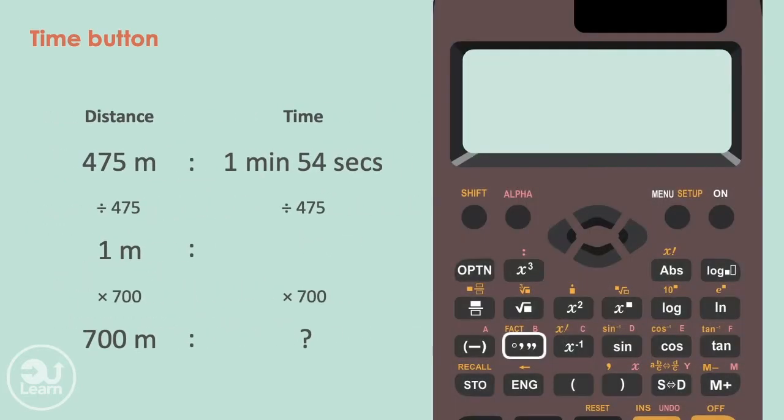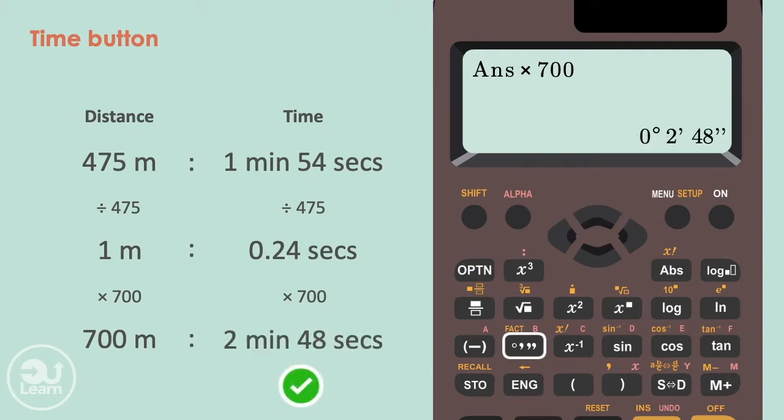Let's use our calculator and the time button to do this. We type 0 followed by the time button as there are no hours, 1 followed by the time button again and 54 followed by the time button again. We now divide the amount by 475 and press equals. One meter will take 0.24 seconds. We now multiply the value by 700 by pressing times and 700. The final answer on the calculator is 2 minutes and 48 seconds.